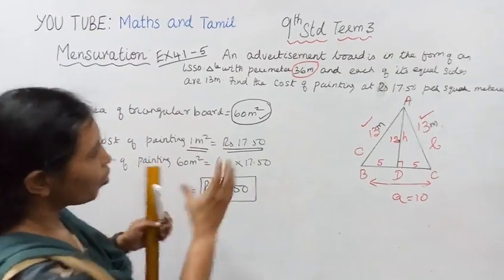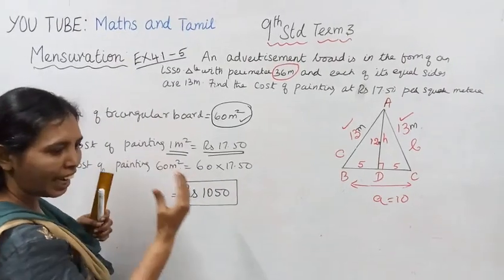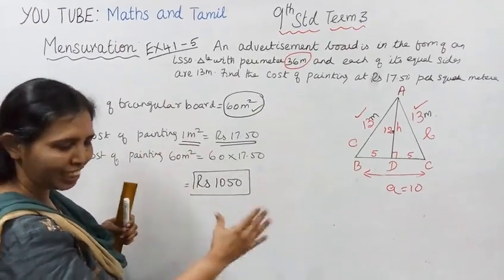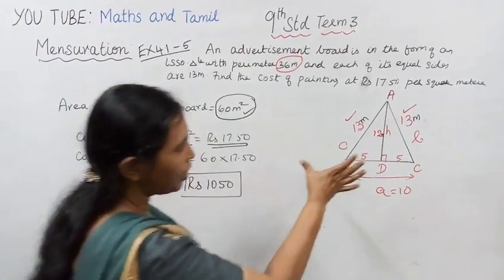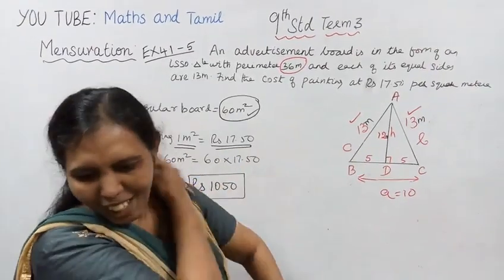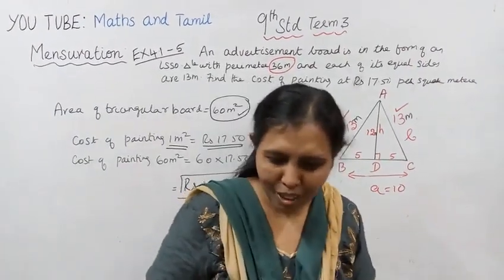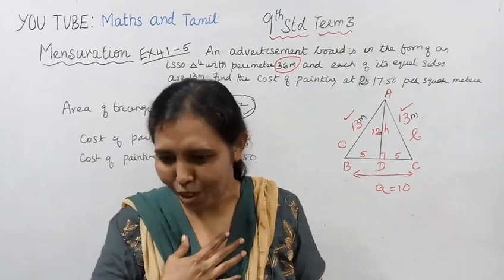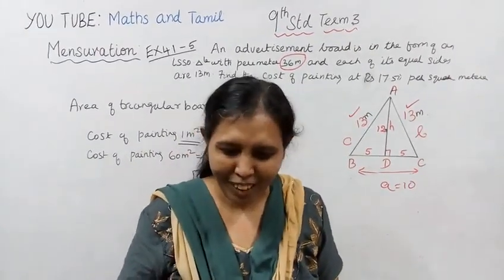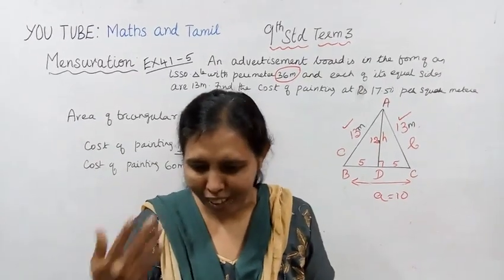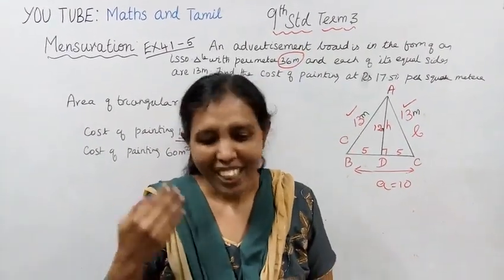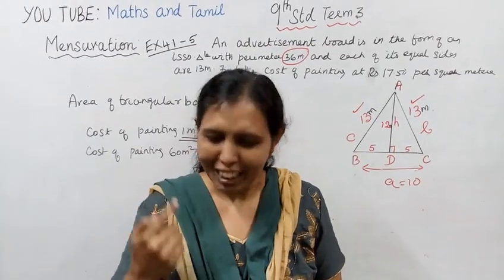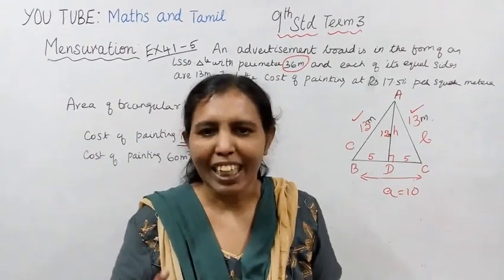The cost of painting the triangular board is Rs.1050. For an isosceles triangle, we used area equals half into base into height. Students, practice this formula. Subscribe to the Max Tamil channel and click the bell button.